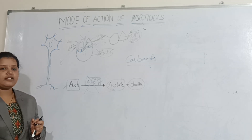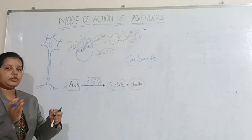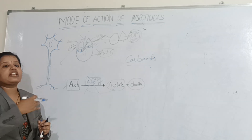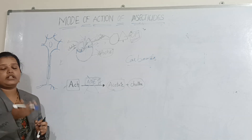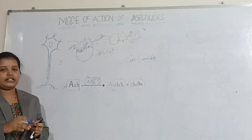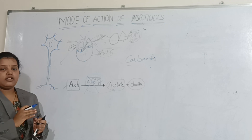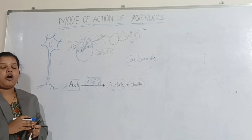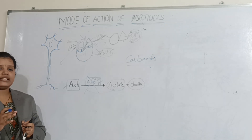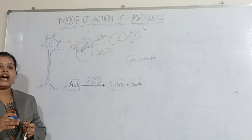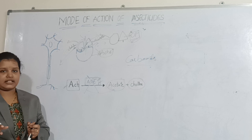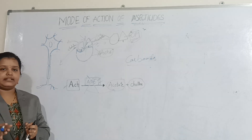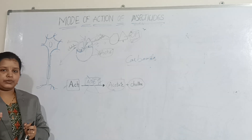Because natural acetylcholine can again bind to the receptor and the insect can return to the normal stage. That is why organophosphate insecticides are more toxic when compared to carbamate insecticides. Thank you.